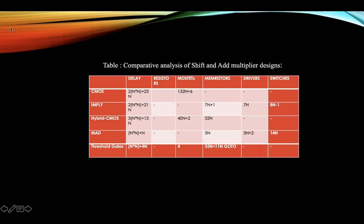The comparative analysis of the shift-and-add multiplier was also done, in which we found that the hybrid CMOS design has greater delay than a pure CMOS design for large N. The MAD design offers the best delay results, followed by the threshold gate approach. All in all, we came to know that MAD is the better approach to be used for designing arithmetic units.